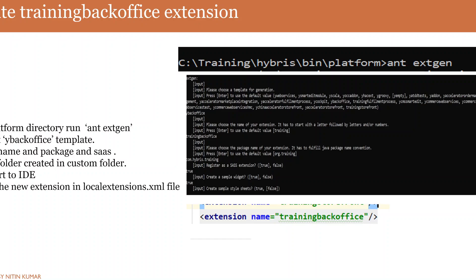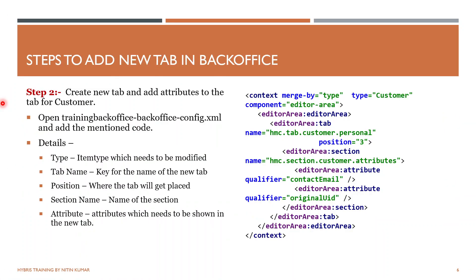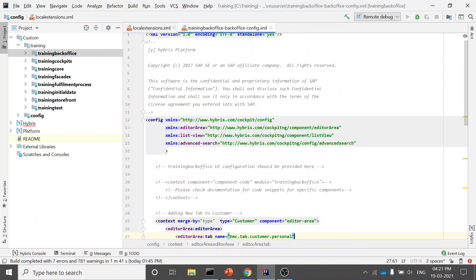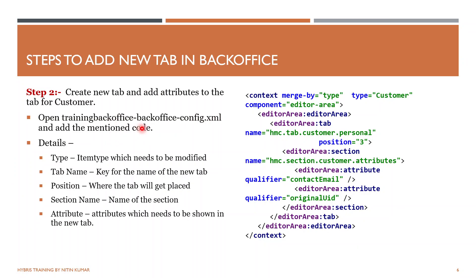Once you have done this, move forward to the coding part of back office customization. You need to code the changes you want to see in your back office. Go to the trainingbackoffice-backoffice.xml file — this file is created inside your new extension. You need to write code in this file. I will also paste this code in the description so you can copy it directly, but I request you to understand why we are writing this code and what it does.